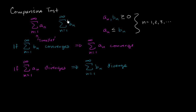So if you wanted to prove that the b sub n series diverges, and you know that all the b sub n's are greater than or equal to zero, maybe you could find another series where each of the corresponding terms are less than the corresponding terms of b sub n, and if you can prove that smaller one diverges, then you'd be all set. We're going to start doing that in the next few videos.